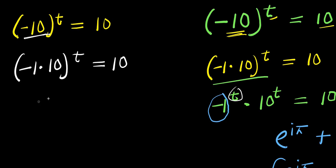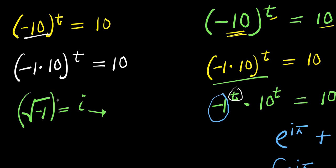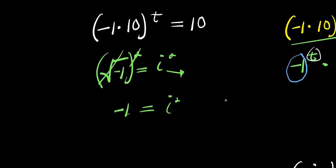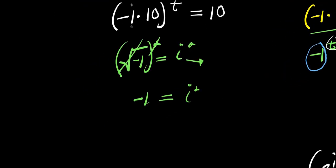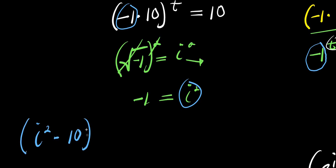If you have the square root of negative 1, this gives you i, the imaginary number. So if I decide to take the square, what happens is this cancels and we have negative 1 equals imaginary number i to the power of 2. So I am going to replace this negative 1 here with i squared. What I am going to have is i squared times 10 raised to the power of t, equals 10.